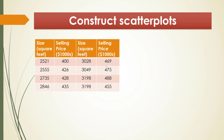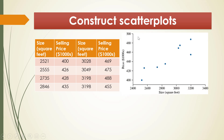The way we construct the scatter plot is: first we make the X axis and the Y axis — this is a coordinate system. The X axis represents the size of the houses and the Y axis represents the selling price. On this coordinate system we mark the ordered pairs. For example, the first ordered pair is 2521 and 400. So on the X axis we look for 2521, and on the Y axis we look for 400, and matching them we get this point.